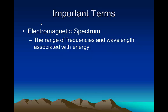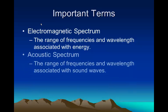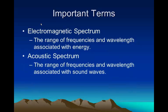The electromagnetic spectrum is a range of frequency and wavelengths associated with energy. Acoustic spectrum is the same thing as the electromagnetic spectrum, but it deals with the frequency of wavelengths of sound waves.